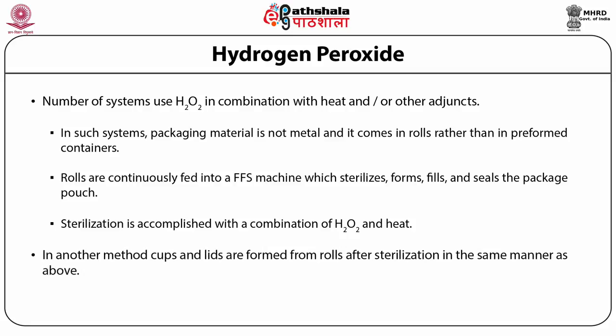In another system which also uses packaging material in the form of rolls, the rolls are continuously fed into the machine which forms, fills and seals the package. Sterilization is accomplished with a combination of hydrogen peroxide and heat. The packaging material travels through a bath of hot hydrogen peroxide which softens the material for forming. Cups are then formed, filled and sealed with a lid which also travels through a hydrogen peroxide bath.